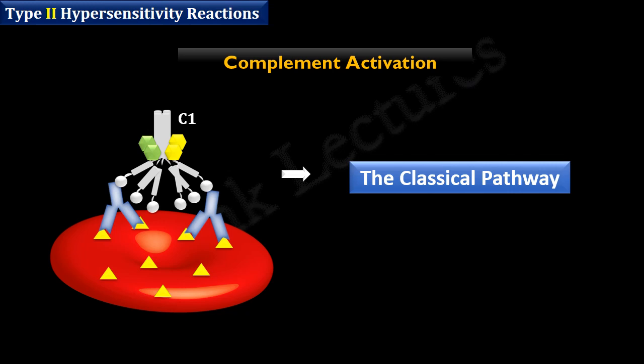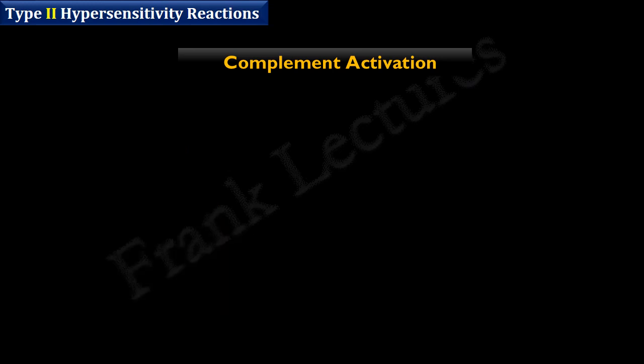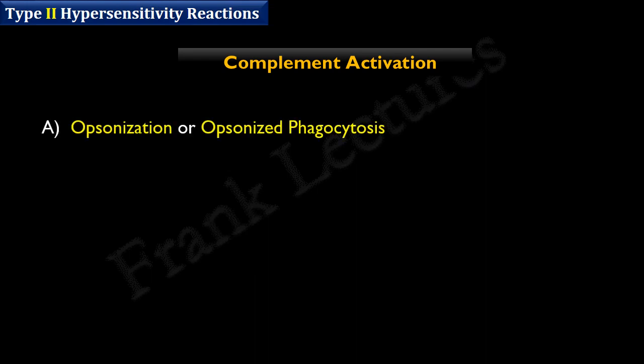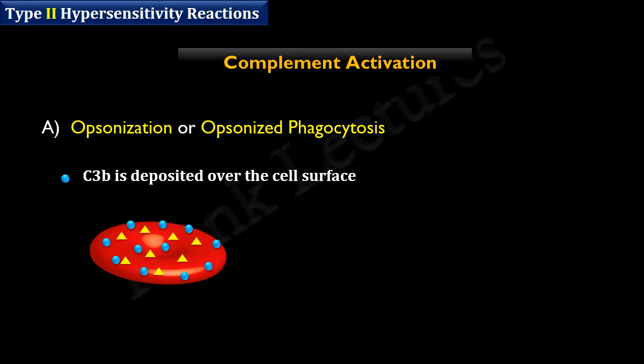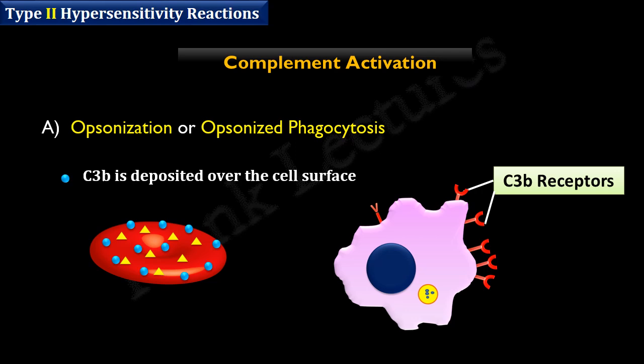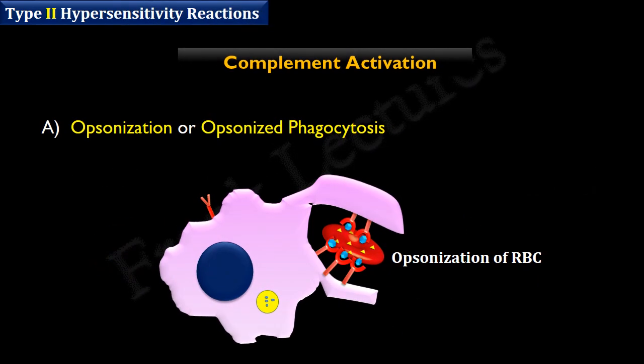Destruction of the red blood cell can happen in two ways. The first is opsonization or opsonized phagocytosis. As a result of complement activation, C3b is deposited on the cell surface. These C3b proteins act as opsonins and coat the cell. Phagocytes such as macrophages have C3b receptors, so the C3b molecules deposited on the cell surface are recognized and bound by C3b receptors present on phagocytes.